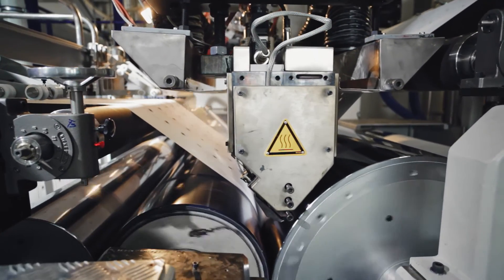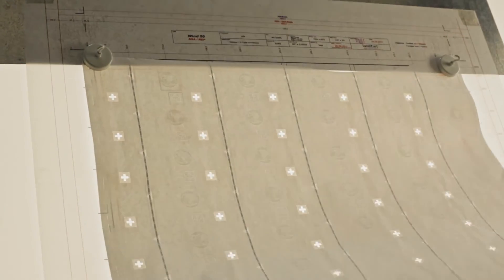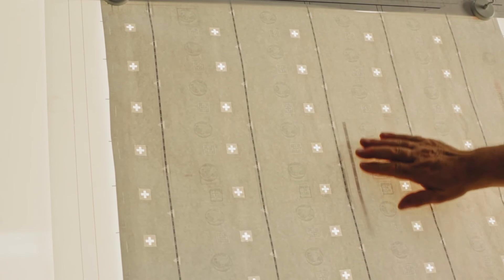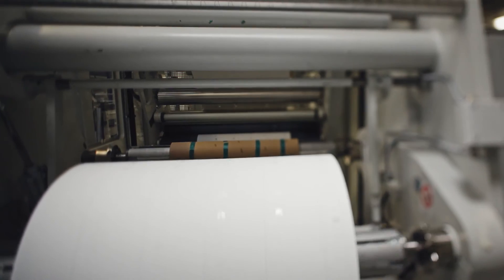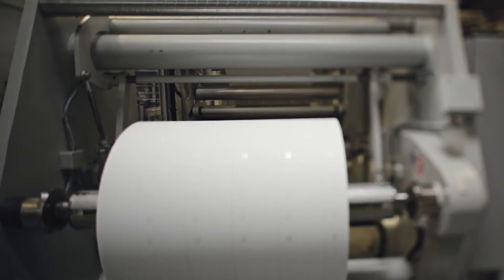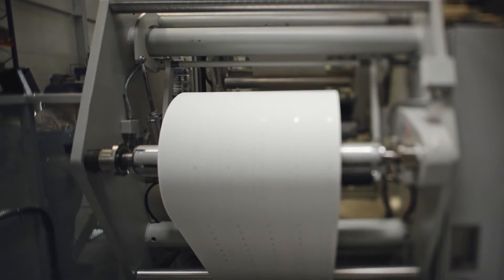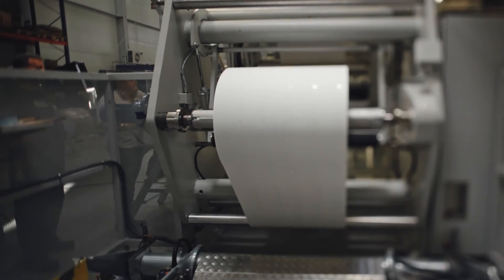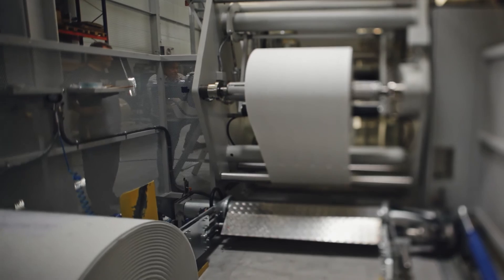The paper layers are bonded to the polymer core using a combination of pressure and heat. The security features are carefully inspected one last time before the Durasafe substrate gets rolled up. It is then cut into individual sheets for printing.